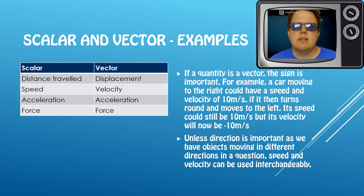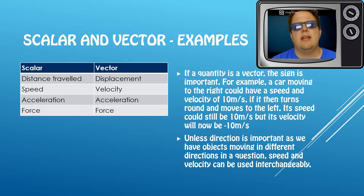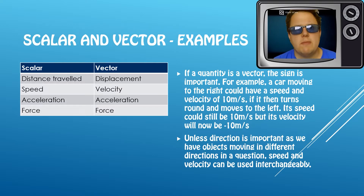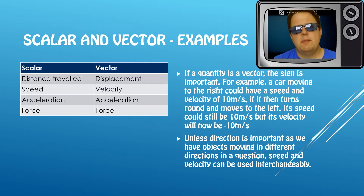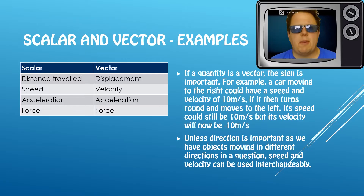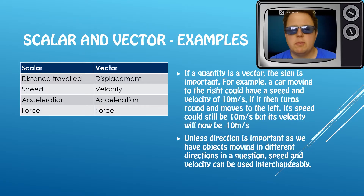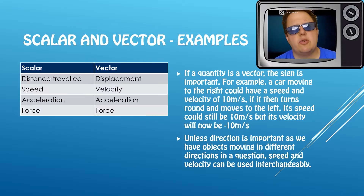One example I like to use — and it's applicable now as I'm recording this during the Tokyo Olympics — is a 400-meter race. If you run 400 meters on the inside lane of a track, your distance traveled is 400 meters. But your displacement — where we care about direction — will be zero, because although you've traveled 400 meters around the track, you've ended up back where you started. That means your average speed will have a value, but your average velocity will be zero because your displacement is zero.